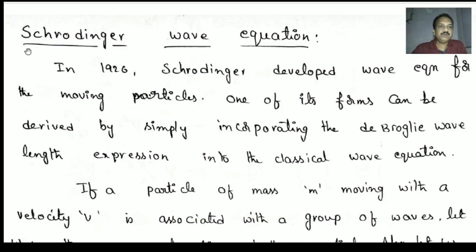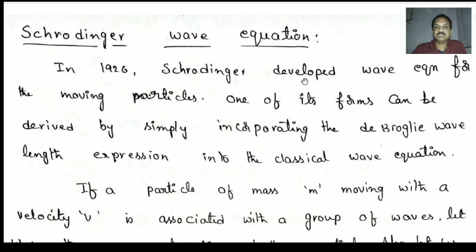Today I am going to discuss Schrödinger's wave equation. This topic belongs to the quantum mechanics lesson. In 1926, Schrödinger developed a wave equation for moving particles, like electrons especially.